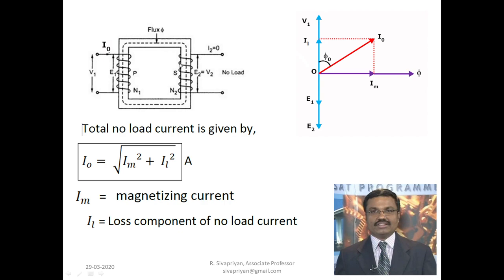The induced EMF on the secondary winding causes secondary current to flow only when a load is connected. If no load is connected, the secondary current I2 becomes zero. However, the primary still draws current because it needs to set up the flux lines. That current is called the no-load current. This no-load current consists of two parts: the magnetizing current component IM and the loss component IL. Adding IM and IL gives us I0, the no-load current.